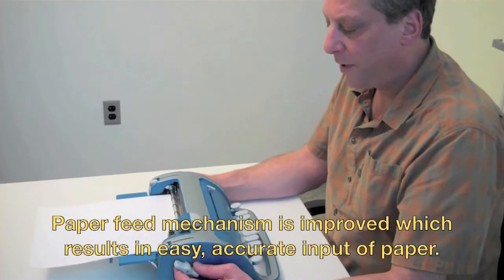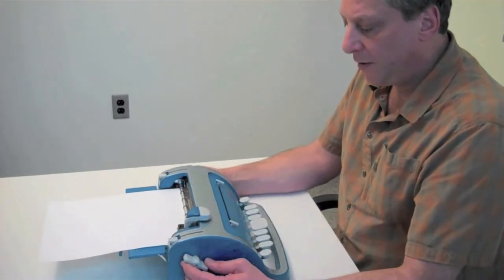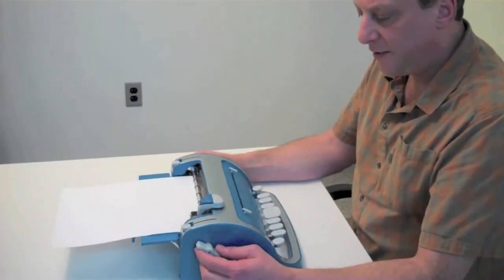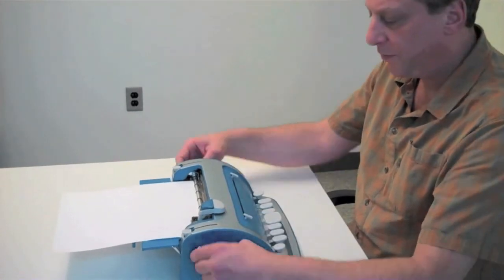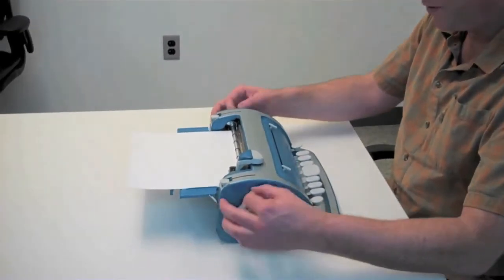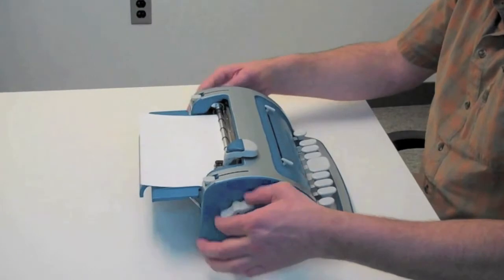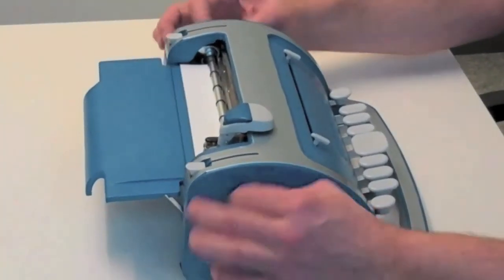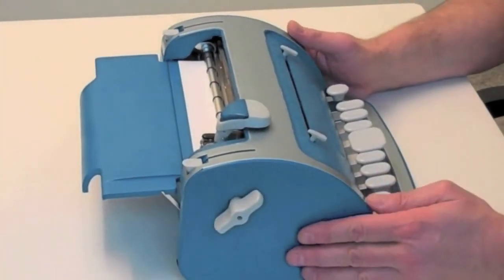Okay, now I'd like to speak about the paper grip mechanism. The drum has been redesigned to grip more of the paper. So therefore the paper will go into the machine and be held into the machine much tighter.